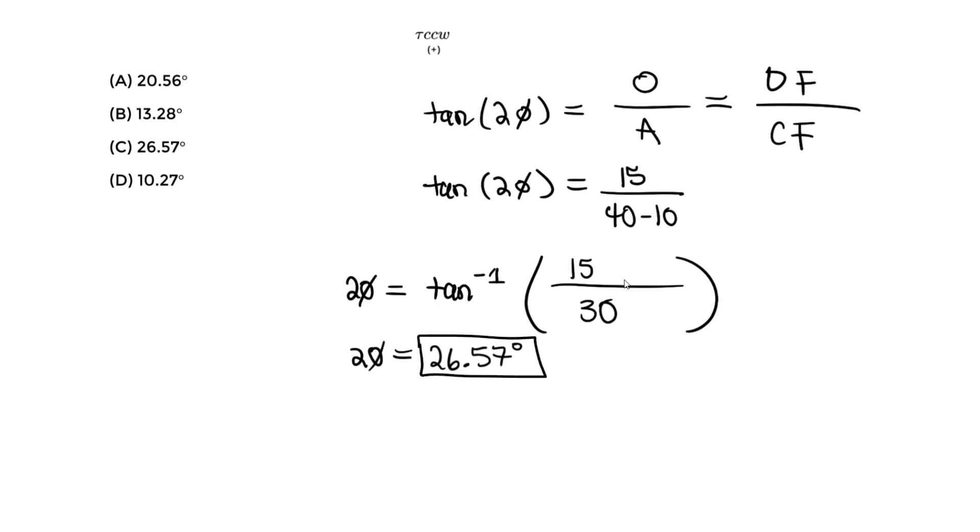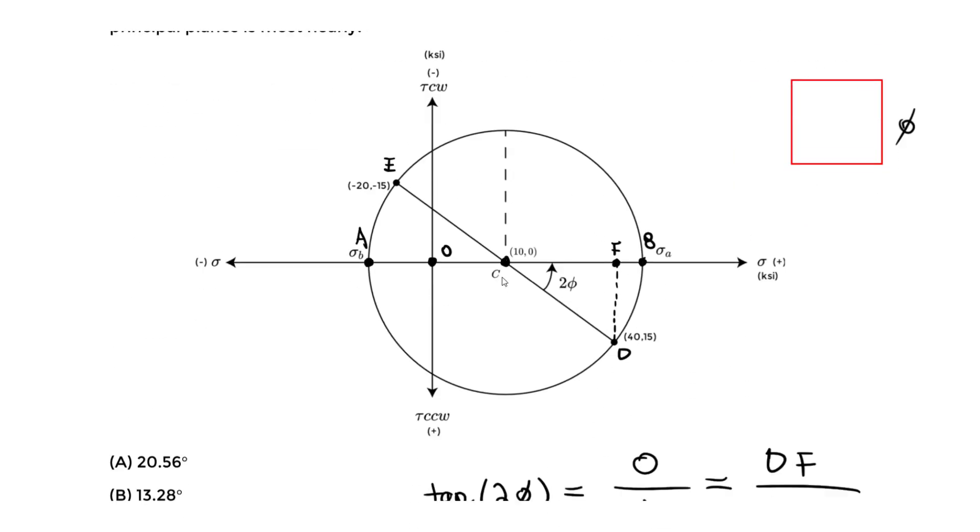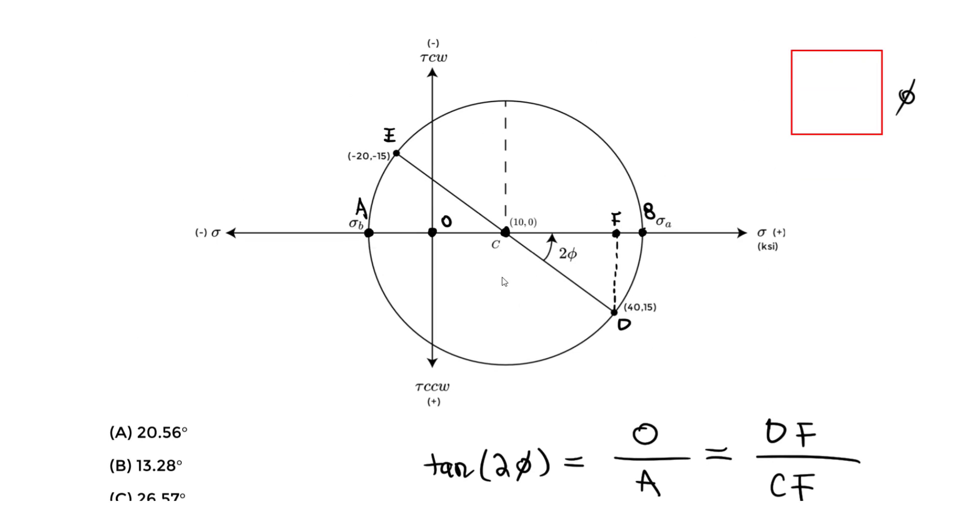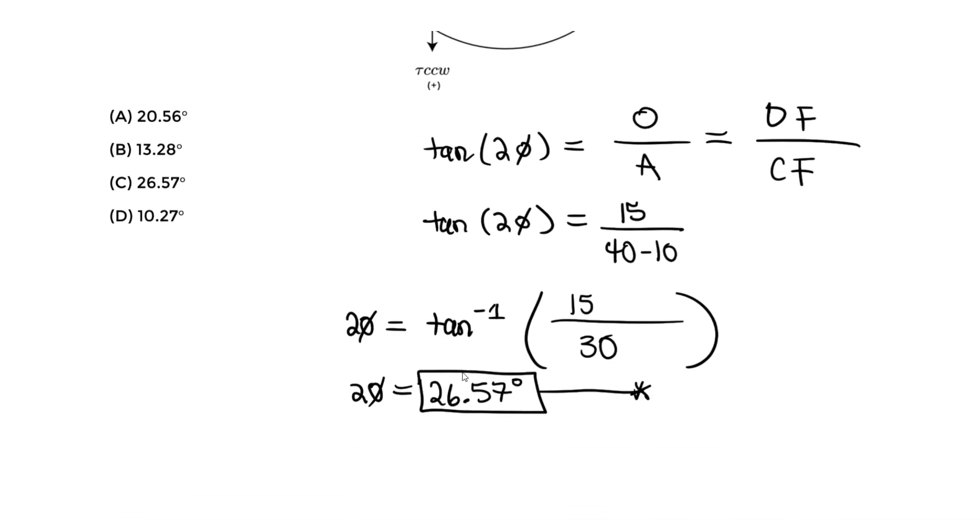So this is how much we need to rotate on the Mohr circle to get to that major, to get to the principal planes, where our major and minor principal stresses act, this angle here. So always remember on the original coordinate system stress element, it's half of this. So we take that value, so 26.57 divided by 2. So we would only rotate 13.29 degrees.